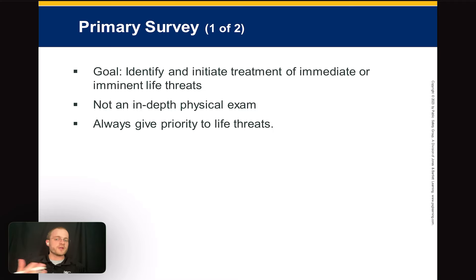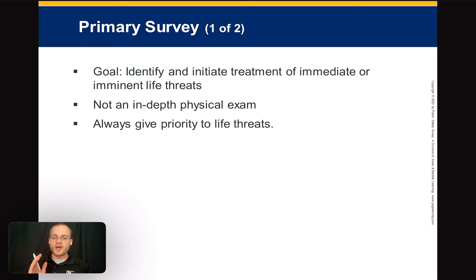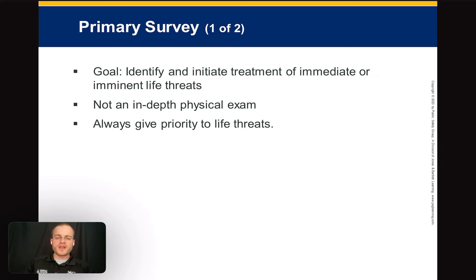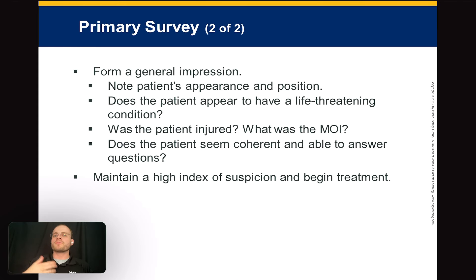The primary survey — the goal, which is a test question — is to identify and initiate treatment of immediate or imminent life threats. This is the across-the-room survey: you walk in and immediately see them shooting blood from the femoral artery, or a cyanotic patient with a needle in their arm — a heroin overdose. These are true life threats: airway compromise, circulation compromise, or severe bleeding — conditions where the patient will die in the next minute or two if you don't act.